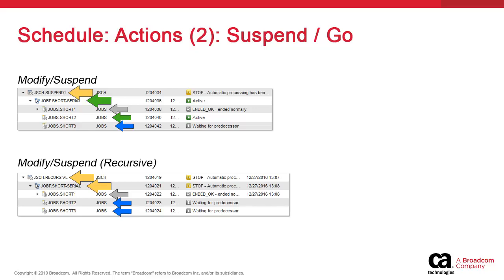The Go function is the opposite — it restarts the schedule. Simple Go will restart the schedule but leave the workflow in a suspended state. Go Recursive will release the entire workflow, which will then be able to complete.